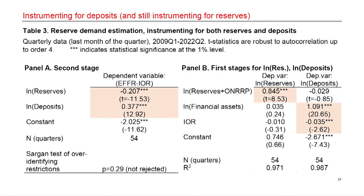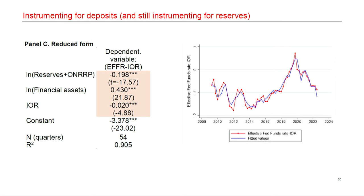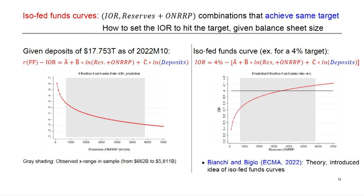Let's think about what this implies for policy, starting with how to set the interest rate on reserves. To summarize the estimation: the left picture graphs the predicted spread coming out of the IV reduced form, given deposits at the end of the sample — about 17 trillion. If you plug that in with the estimated coefficients, you can trace out the predicted spread for various values of reserves plus ONRP. This gives us a pretty good handle on how the Fed funds-IOR spread moves with supply. From that, we can think about how to set the interest rate on reserves to hit a desired target given the balance sheet size.